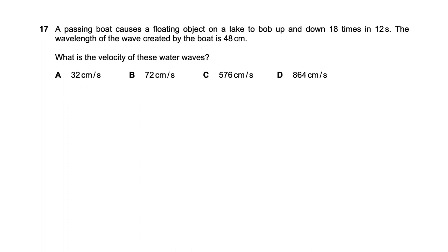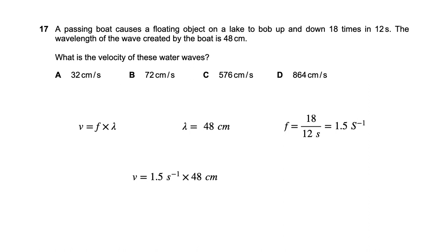Question seventeen: a passing board causes a floating object to bob up and down 18 times in 12 seconds. The wavelength of the wave is 48 centimeters. Frequency equals 18 divided by 12 equals 1.5 Hz. Wave velocity equals frequency times wavelength equals 1.5 times 48 cm equals 72 centimeters per second.